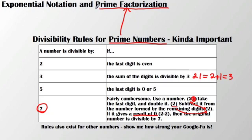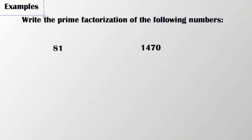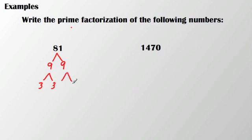So back to the idea of prime factorization. Prime factorization is a way I can take a number and break it down into its prime factors. Let's take, for example, the number 81. I'm going to use a factor tree. I know that 81 is divisible by 9, which gives me 9 times 9, but I'm going to break it down into its prime factors. Each 9 can be broken down, and I'm left with 3 times 3 times 3 times 3. Using exponential notation, I can write that as 3 to the 4th.